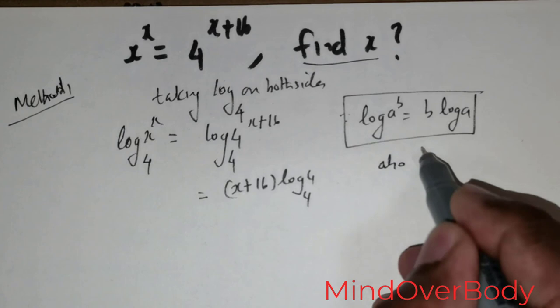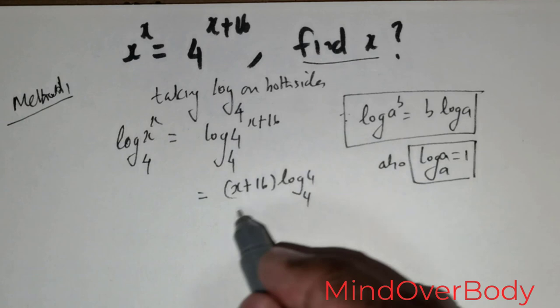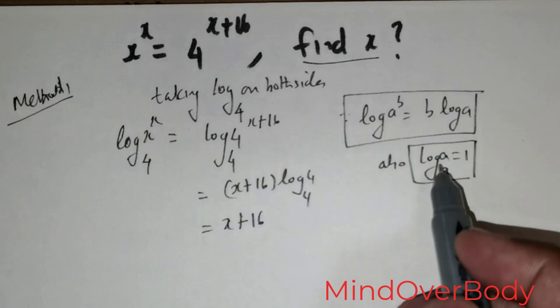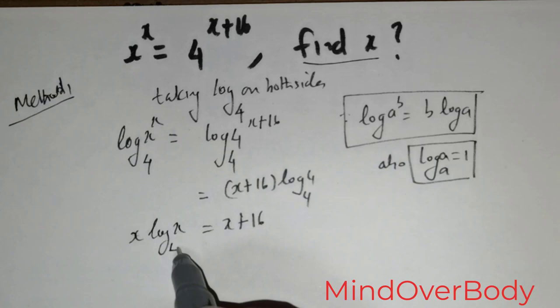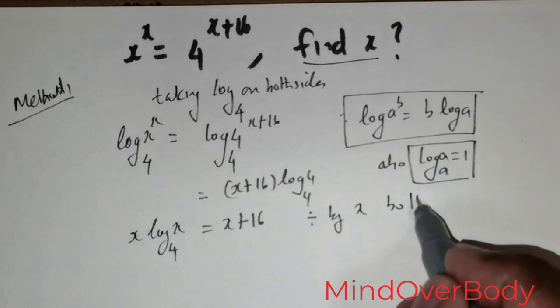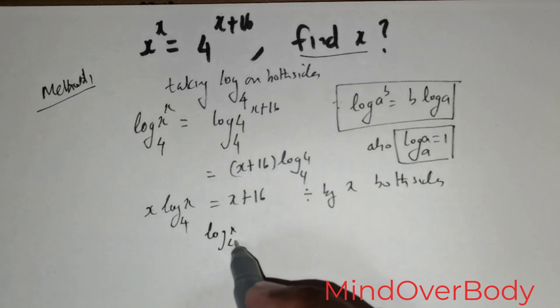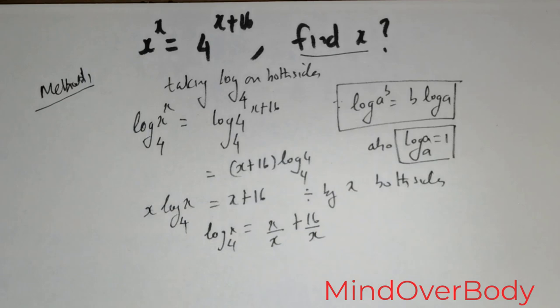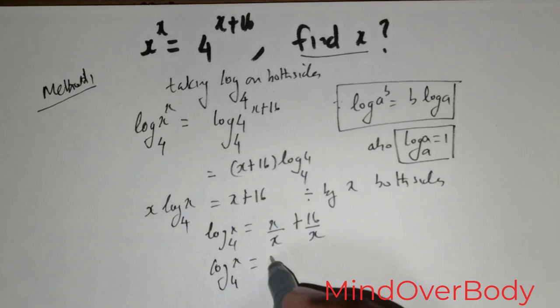Using that formula, the right side becomes x plus 16 times log of 4 to the base 4. We also have the formula log a to the base a equals 1, so the right side becomes x plus 16. On the left I have x times log x to the base 4. Dividing both sides by x gives log x to the base 4 equals 1 plus 16 over x.